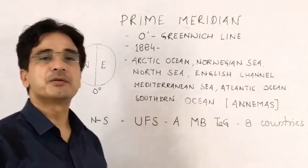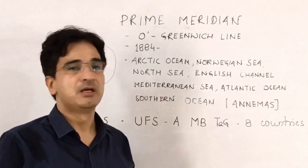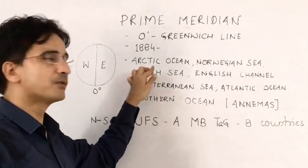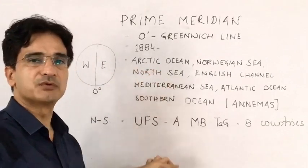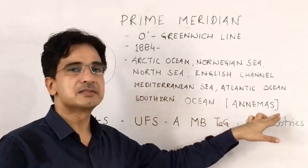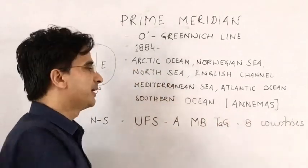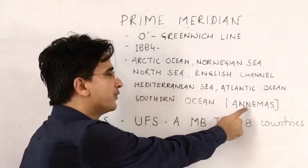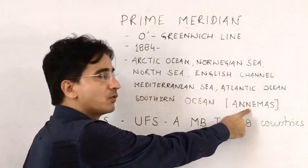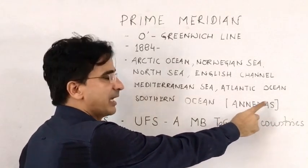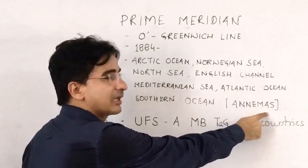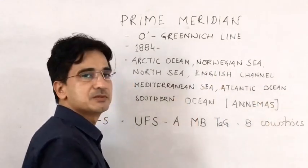Now we come to the water bodies. It passes through various water bodies, arranged from north to south. The code is NMAS: N for Norwegian Sea, another N for North Sea, A for Arctic Ocean, M for Mediterranean Sea, A for Atlantic Ocean, and S for Southern Ocean. Also E for English Channel.